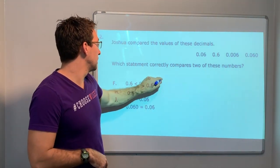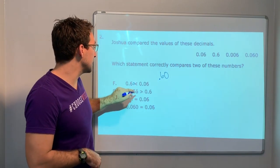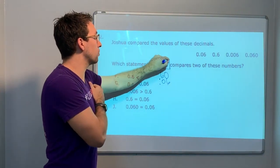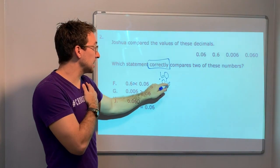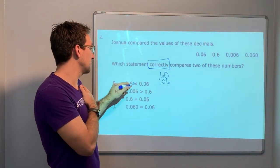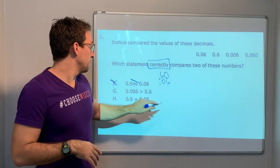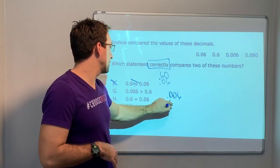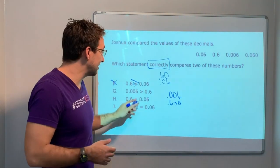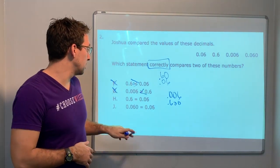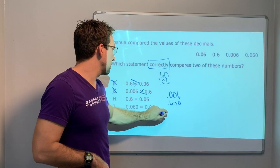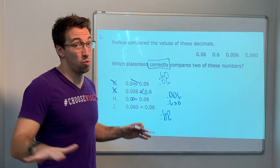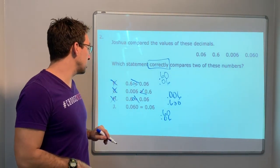We need to stack them. Point six zero — because you can always add a zero at the end of a decimal — and then point zero six. Six is less than 60, so it should be this way; F is wrong. Six thousandths is 0.006, and six hundred thousandths is 0.600, which is bigger than six, so G is wrong. Point six zero equals point six zero — but point six zero does not equal point zero six, so H is wrong.